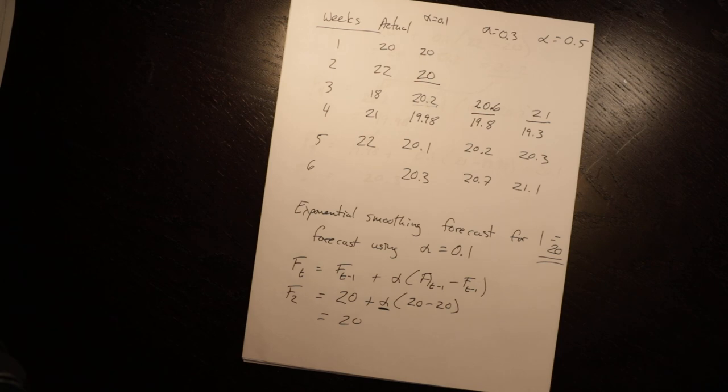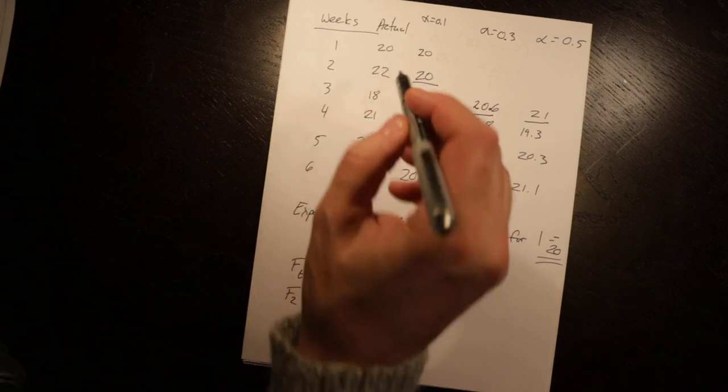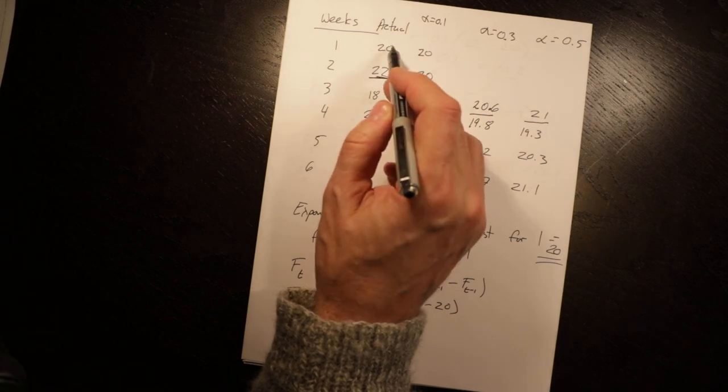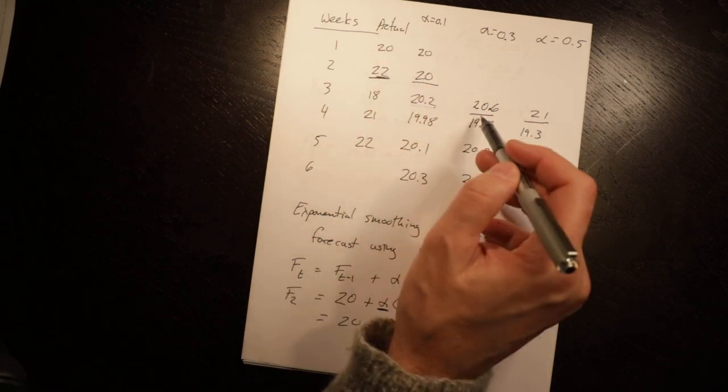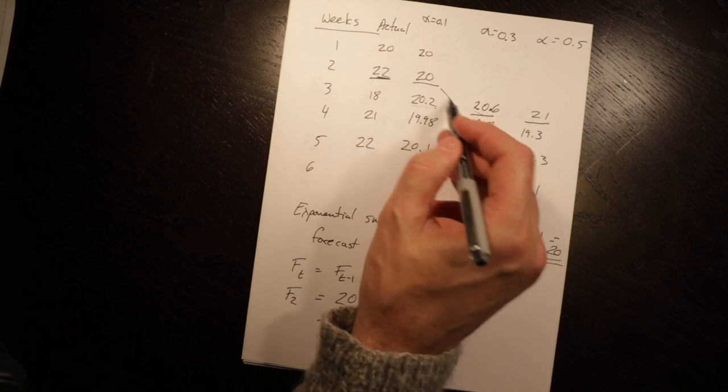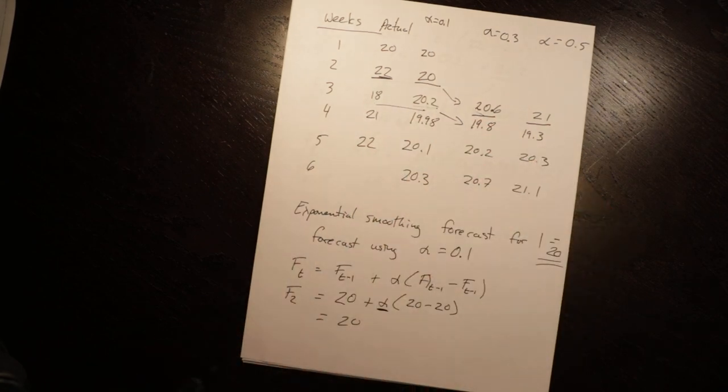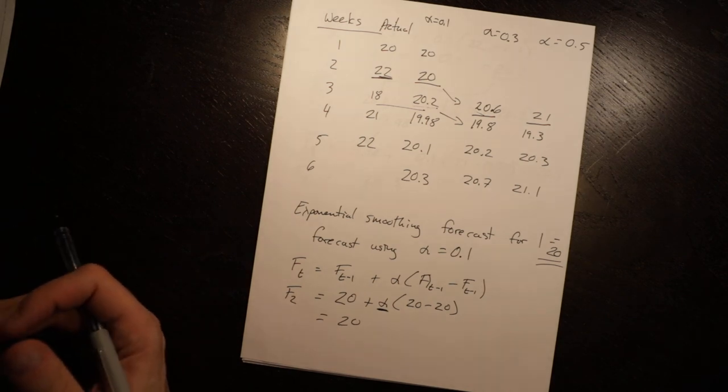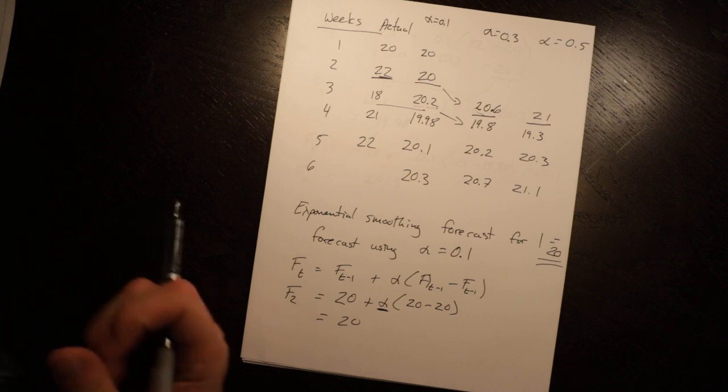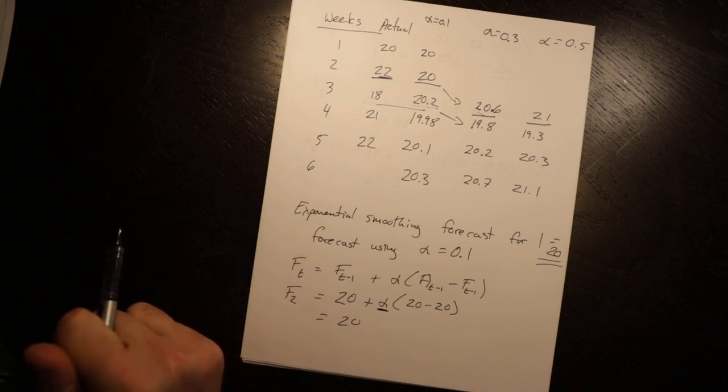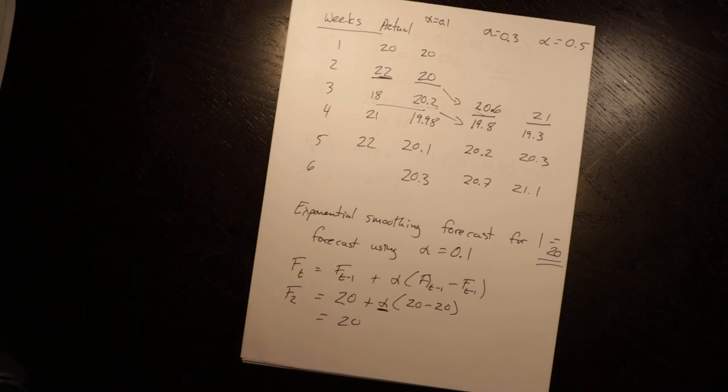You start with the trend, you adjust using the smoothing parameter and the difference between the actual and the forecast. It's a relatively straightforward approach; just need to keep straight which period you're forecasting and which numbers to use. You use one and two for, you use two for three, use three for four, and so on. That's a mistake that students often make. People find this a little bit confusing, but once you figure it out, it's quick and easy and is worth spending a bit of time on studying.